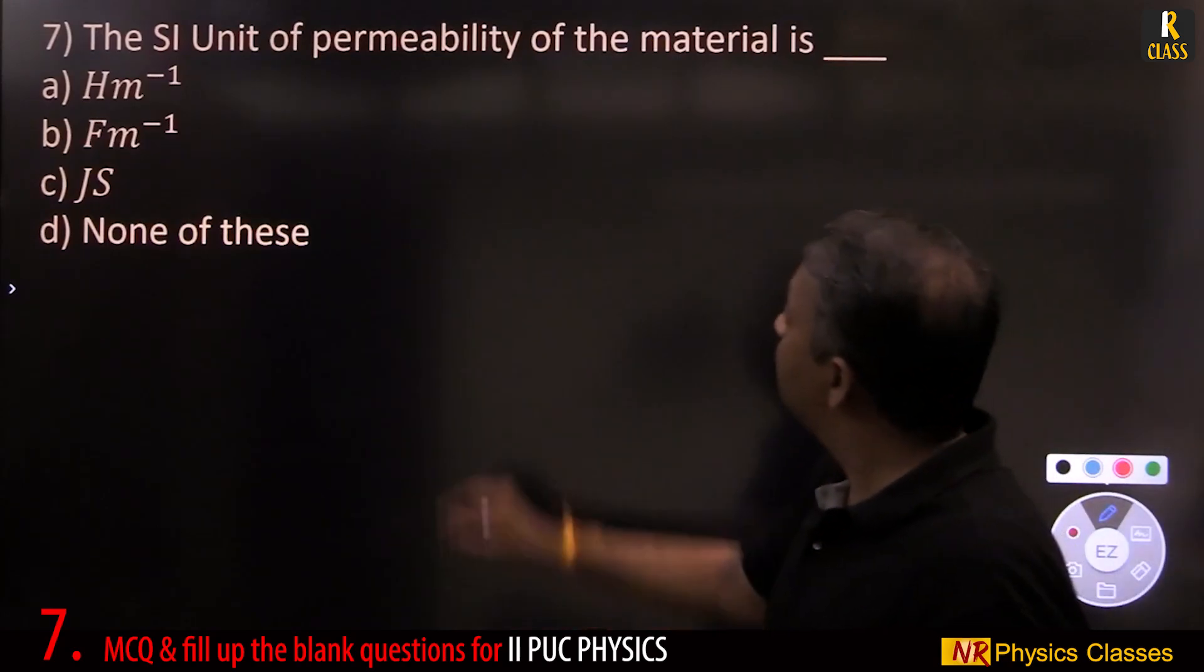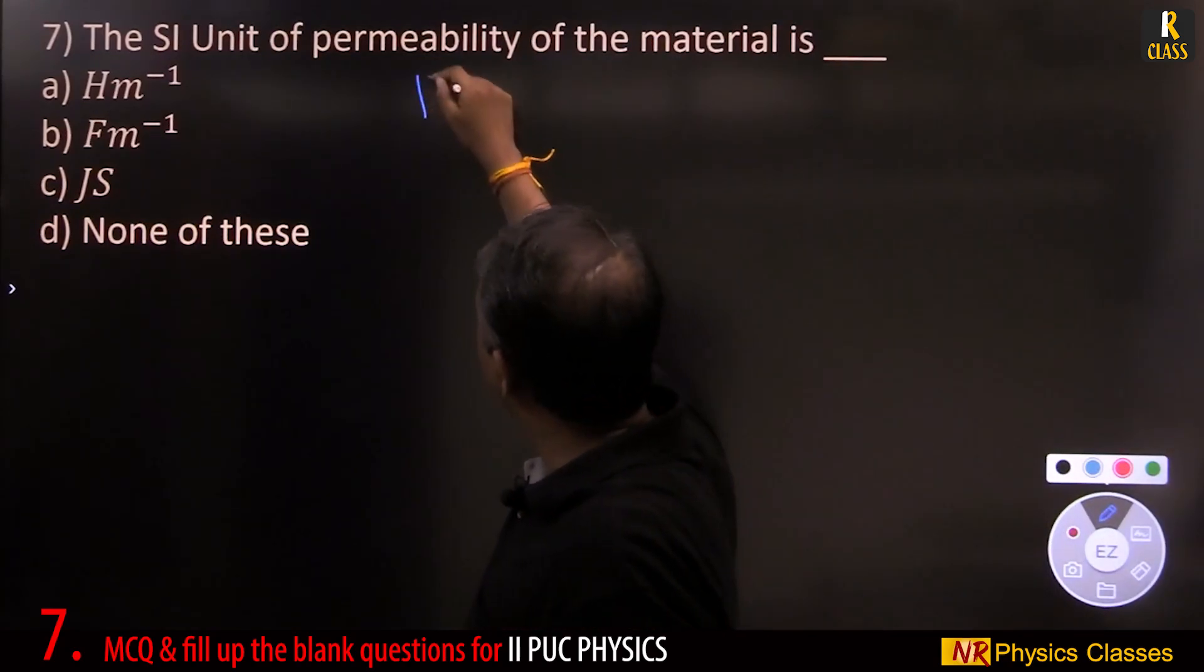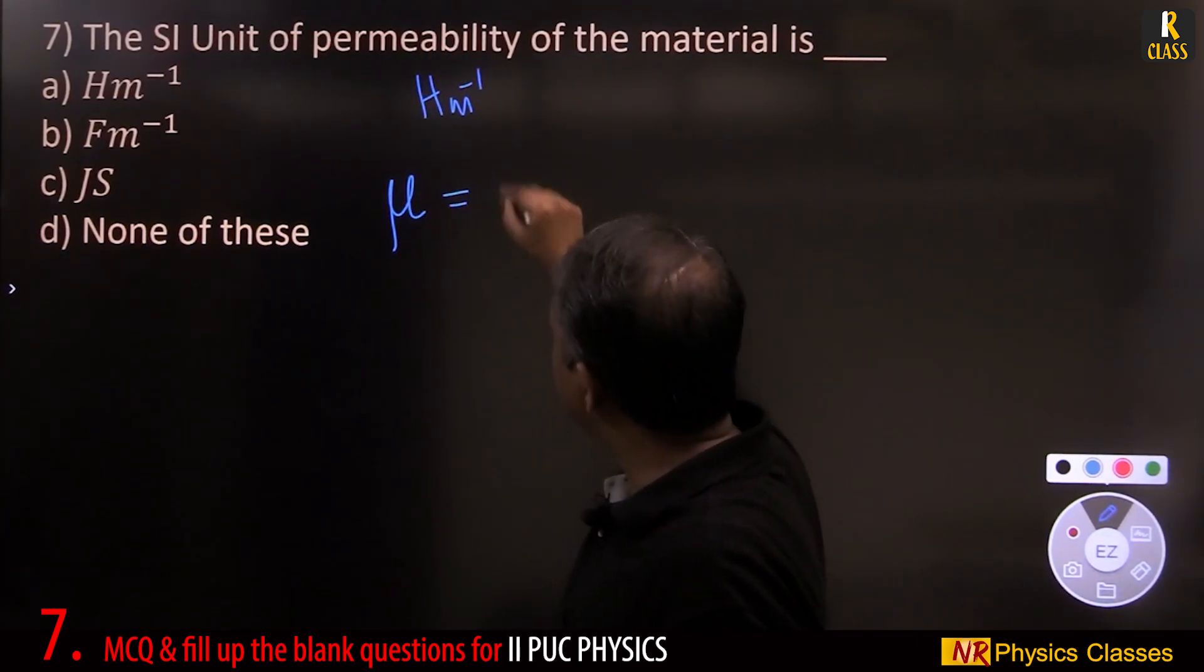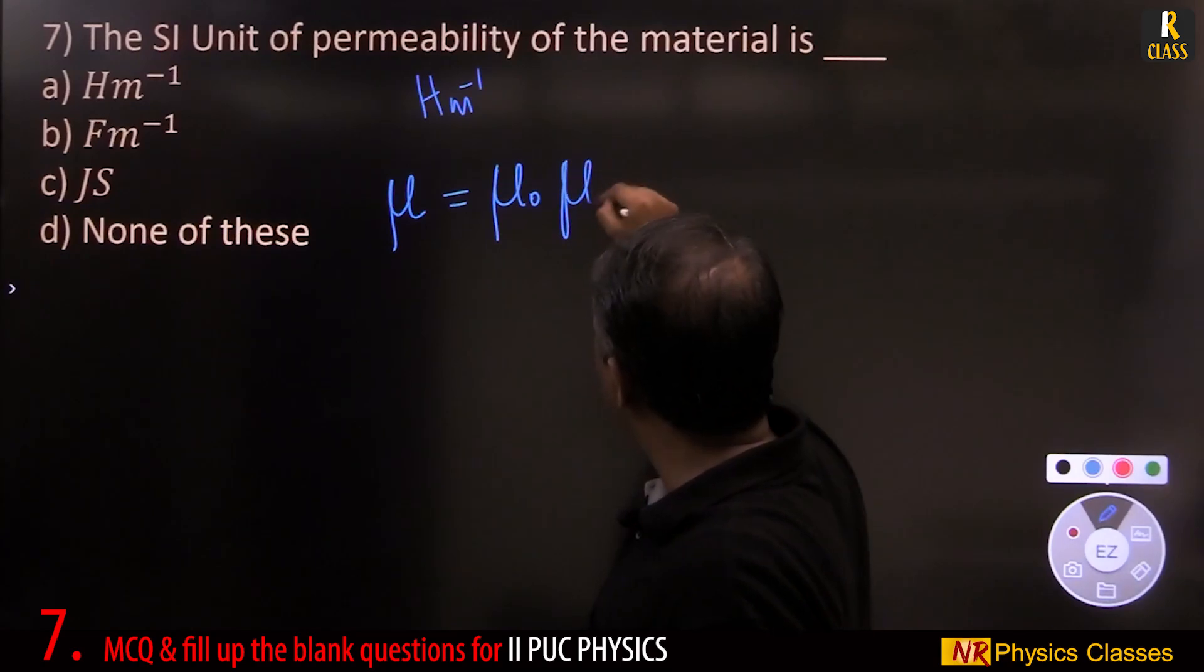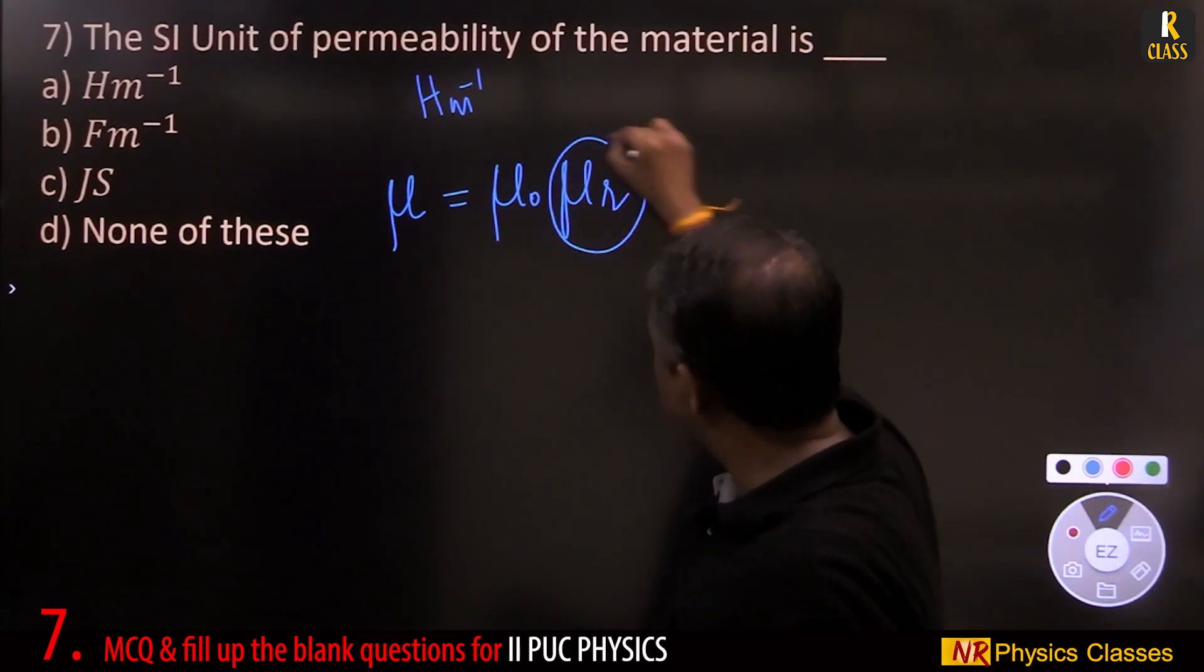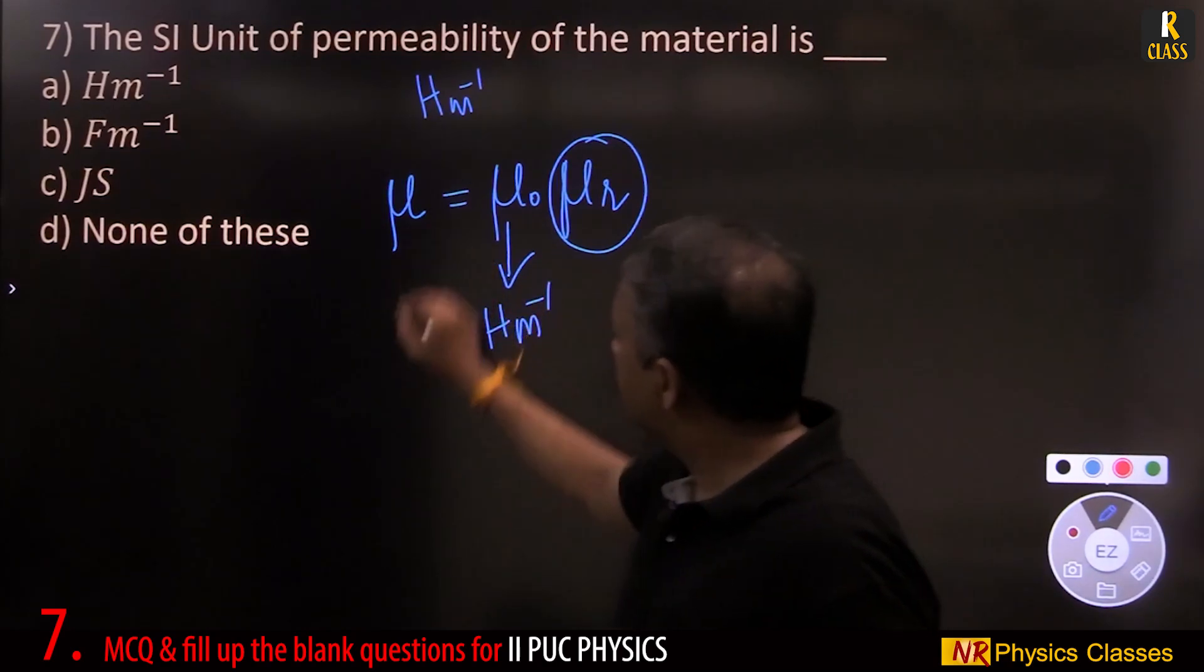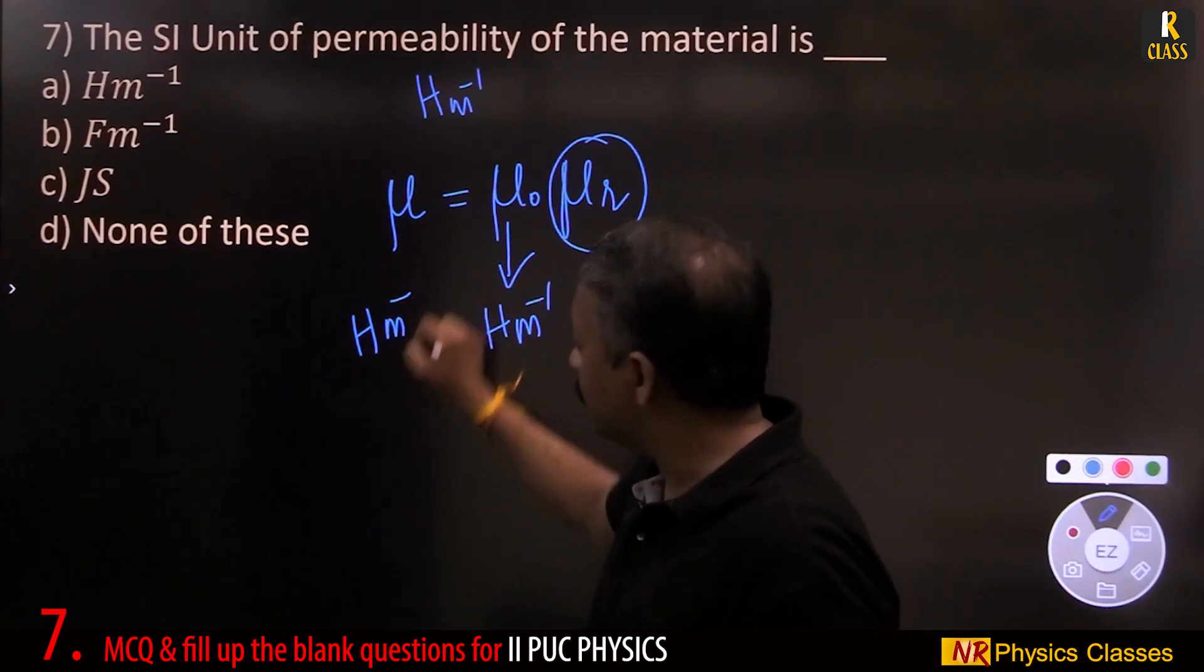SI unit of permeability is Henry per meter. Permeability means mu. Mu is mu naught into mu r. This is dimensionless. Mu naught is Henry per meter. Therefore, permeability is also Henry per meter.